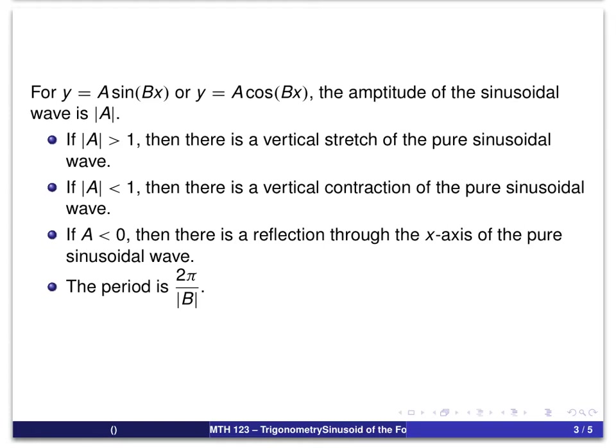So, some of the things that we're going to assume you're familiar with at this point are the kind of standard meanings of the values of a and b. Basically, a controls the amplitude of the function and b controls the period.